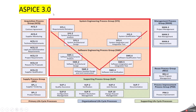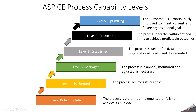In ASPICE 3.0, it has three process groups: one is primary life cycle process, another one is organizational life cycle process, and another one is supporting life cycle process. In our previous video, we deeply discussed about these three life cycle processes. I have mentioned the link in the description. You can watch it.